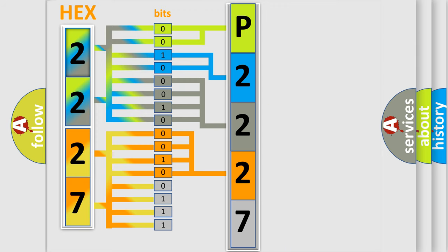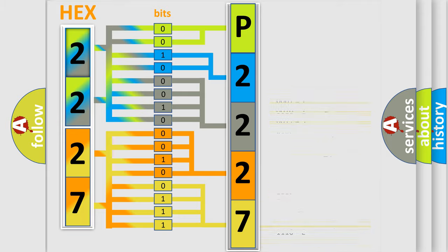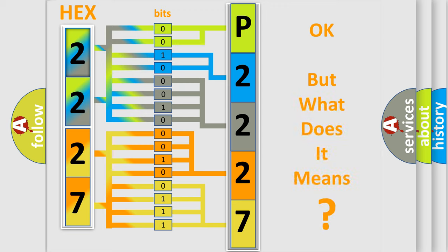A single byte conceals 256 possible combinations. We now know in what way the diagnostic tool translates the received information into a more comprehensible format. The number itself does not make sense to us if we cannot assign information about what it actually expresses.